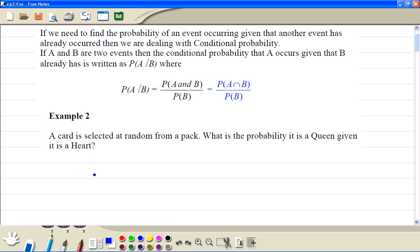The probability the card is queen and heart - there is one queen of hearts in the pack, so 1 out of 52. Then the probability it's a heart, there are 13 of them, so it's 13 out of 52.